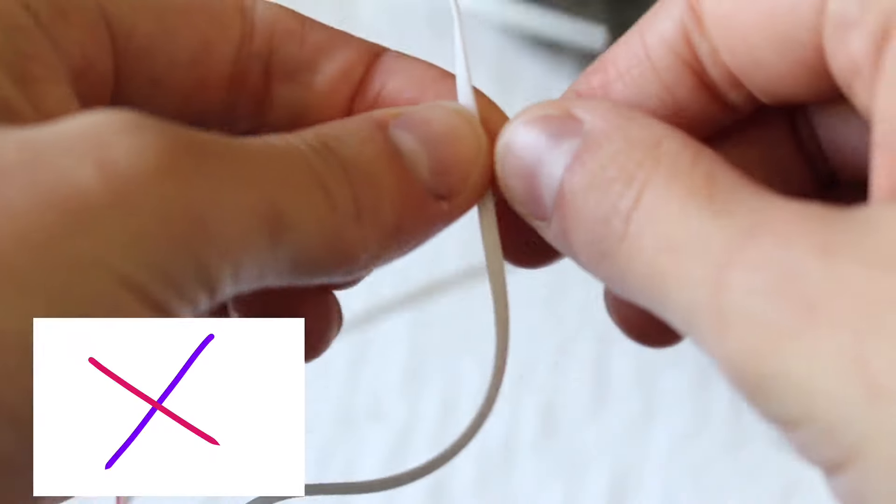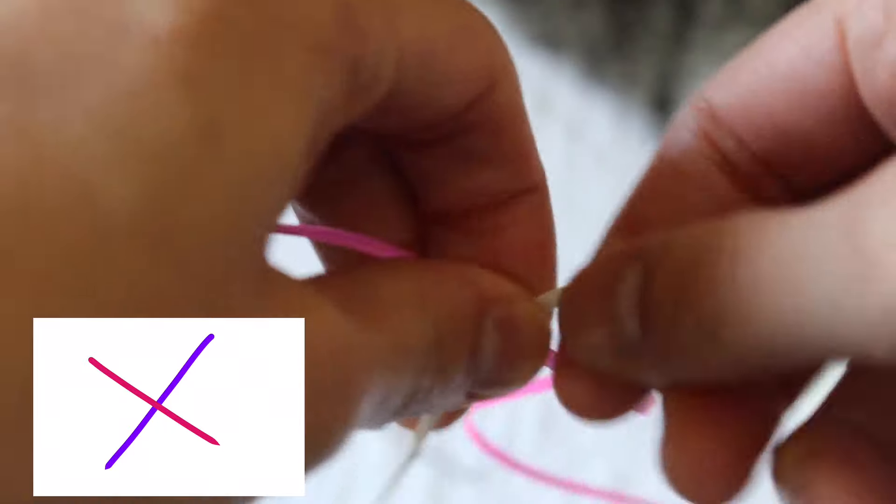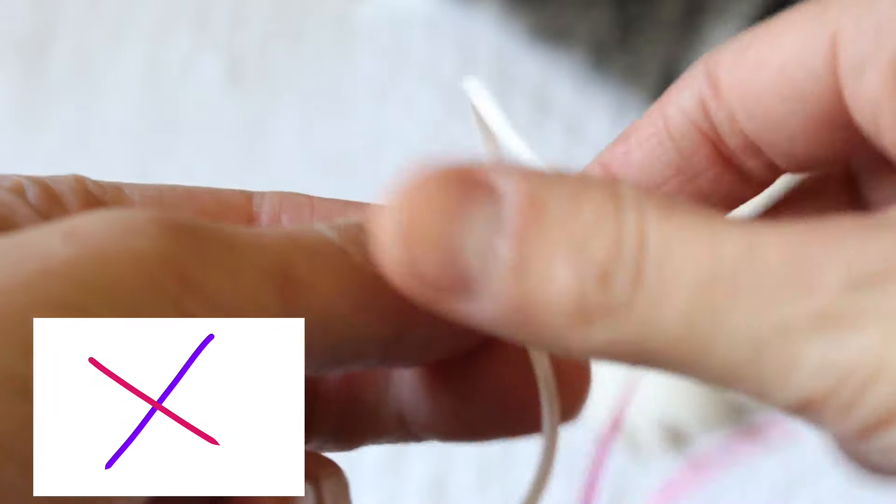Then I'm gonna form an X over my finger like this. I have my white strand on the bottom and my pink strand over the top of it.